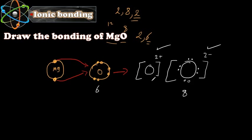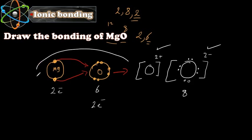Now because magnesium has a positive charge and oxygen has a negative charge, they will bond. We write Mg²⁺ because it lost two electrons, and O²⁻ because it gained two electrons. In exams, you need to first draw the atoms before they lose electrons, draw the arrows showing transfer, then draw them again with the charges.